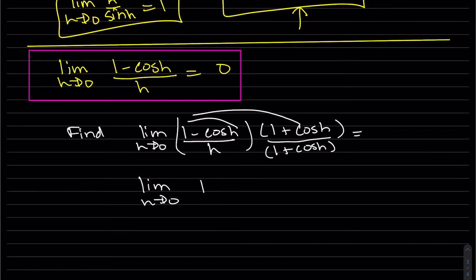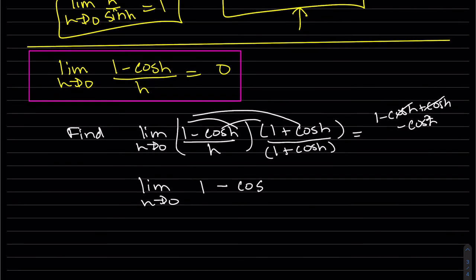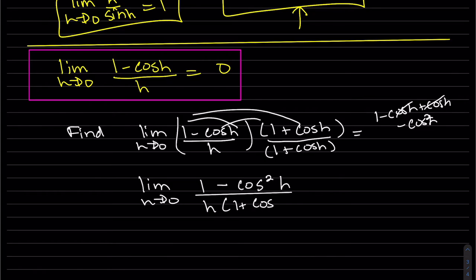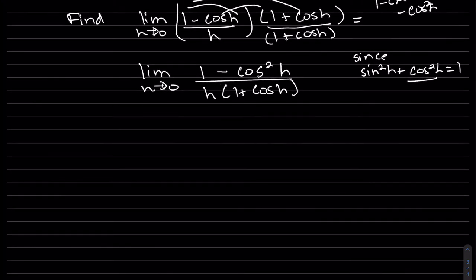We foil it out. We get minus cos h plus cos h. The middle terms cancel. The reason why we did this, we know that's equal to sin² h, right?